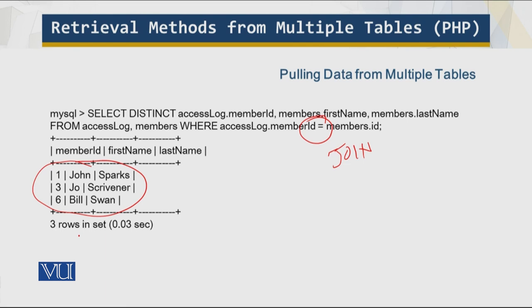In this module, we showed the limitations of what we were getting without a join, then applied the join to get more meaningful results. As I mentioned in the first module of the course, we are going to use a hands-on approach — open the hood and fix the problem, building understanding step by step. You are welcome to ask questions and we will be happy to answer them.